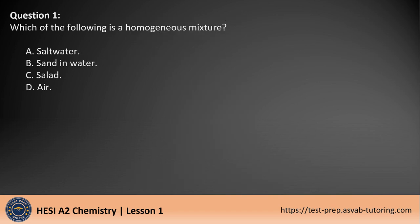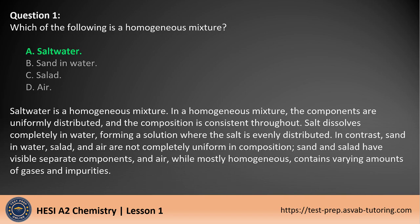Question 1. Which of the following is a homogeneous mixture? A. Saltwater. B. Sand and water. C. Salad. D. Air. The answer is A. Saltwater is a homogeneous mixture. In a homogeneous mixture, the components are uniformly distributed, and the composition is consistent throughout.